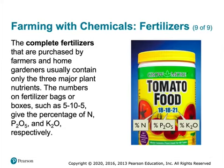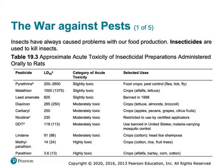When you buy a fertilizer, they often have three numbers. The first number is the percent of nitrogen; the second number is the percent of diphosphorus pentoxide; and the last number is potassium oxide, sometimes called potash. So if you ever wonder what those numbers mean when you buy fertilizer, that's what they are.